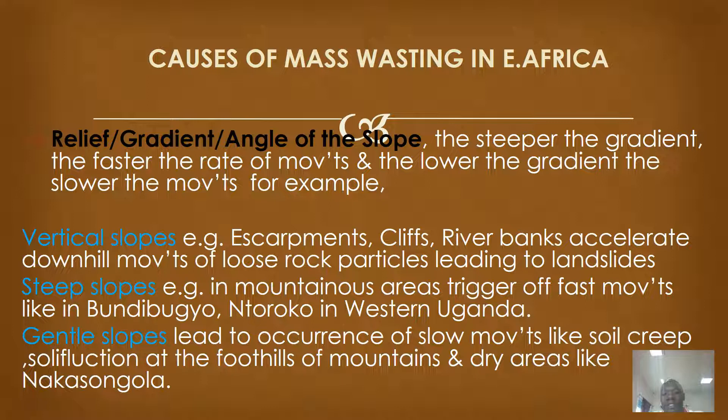For example, vertical slopes like escarpments, like cliffs, like river banks, accelerate downhill movement of loose rock particles, leading to landslides. When you go to the coastal areas around Mombasa, we have those banks which can trigger off massive movements. When you move to Butiaba escarpments in western Uganda, those can also trigger off rapid movements such as rock falls.